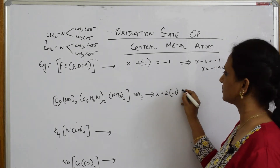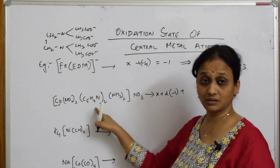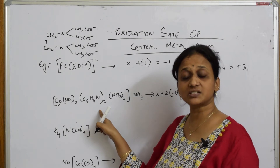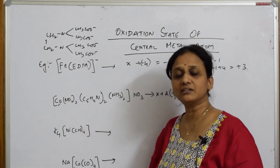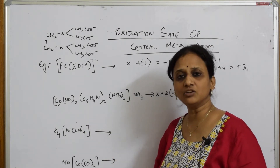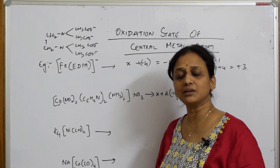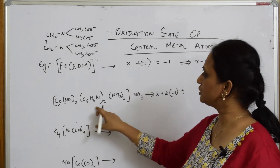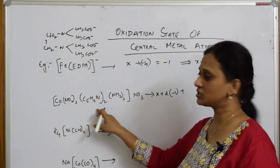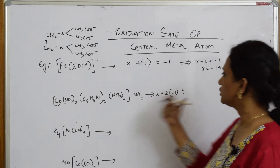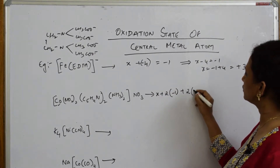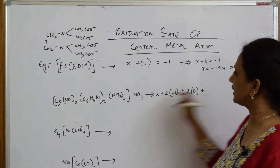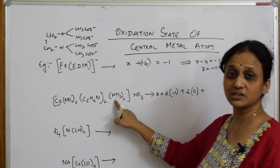First, study the neutral ligand table, anionic ligand table, and cationic ligand table — then come back to these problems. The next ligand here is a neutral ligand, so its charge contribution is 2 × 0 = 0.